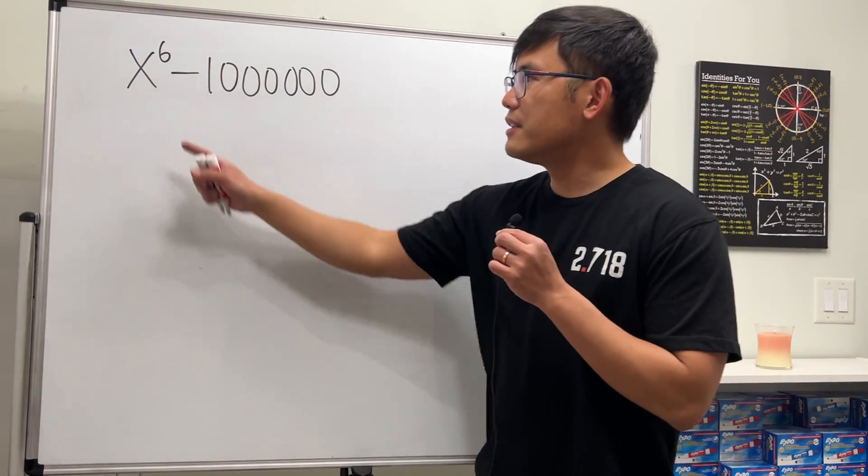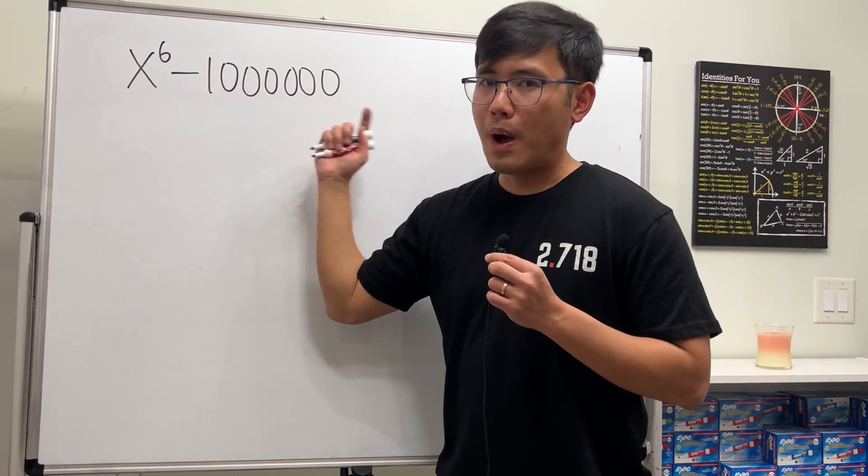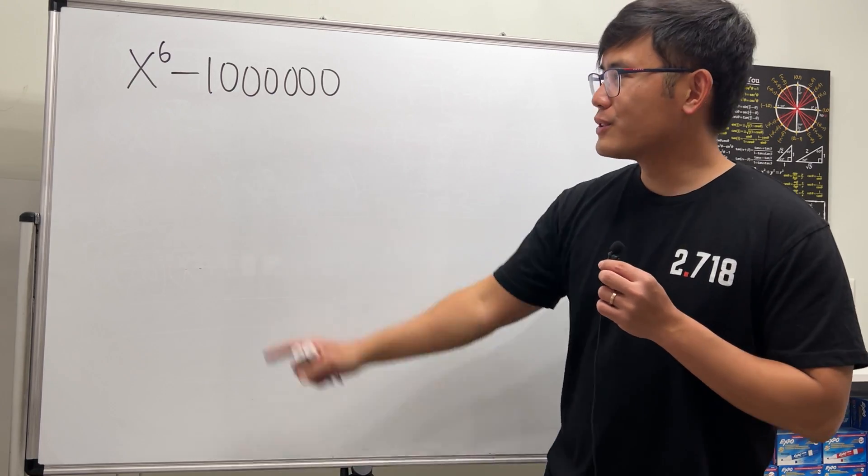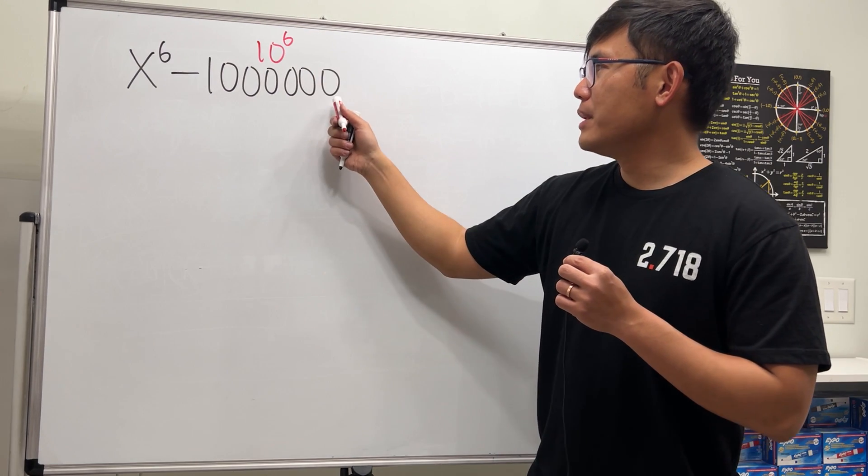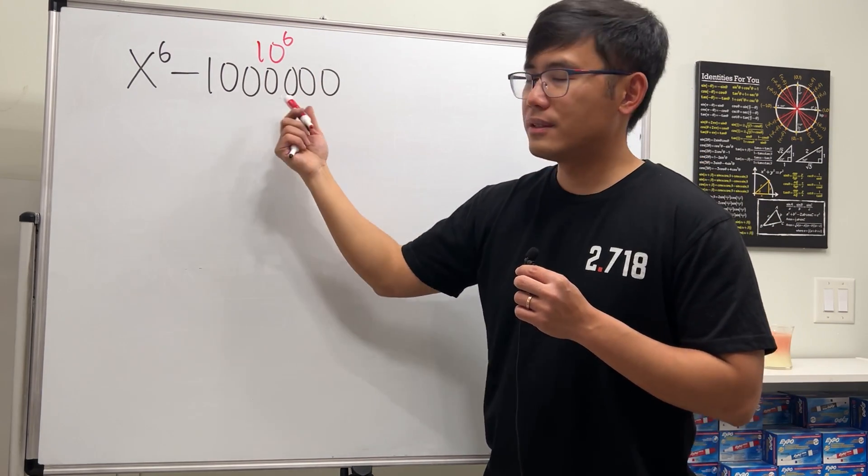Okay, here we are going to see how to factor x to the 6th power minus 1 million. And the reason I chose 1 million is because 1 million is 10 to the 6th power, because we have 1, 2, 3, 4, 5, 6 zeros.